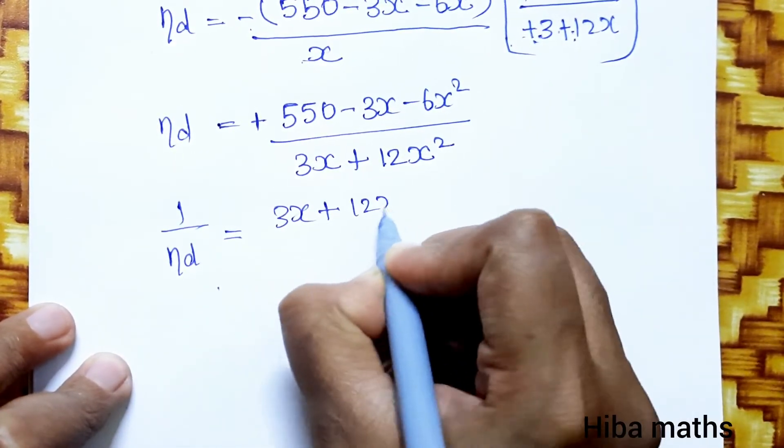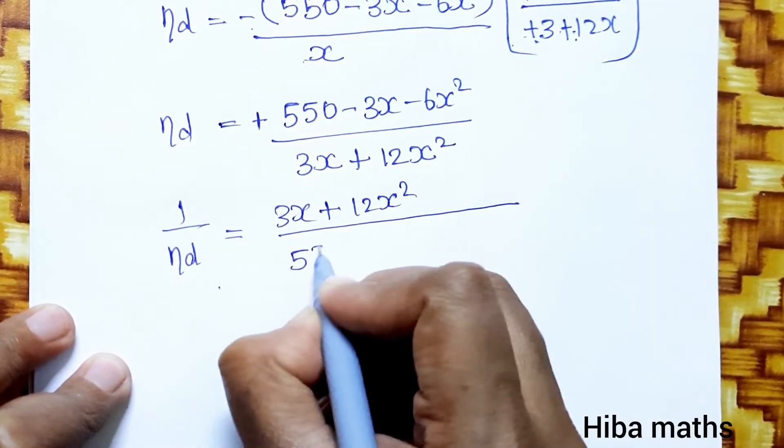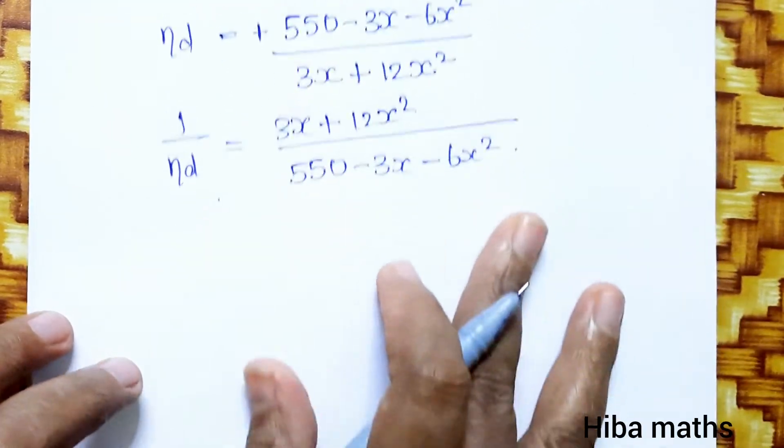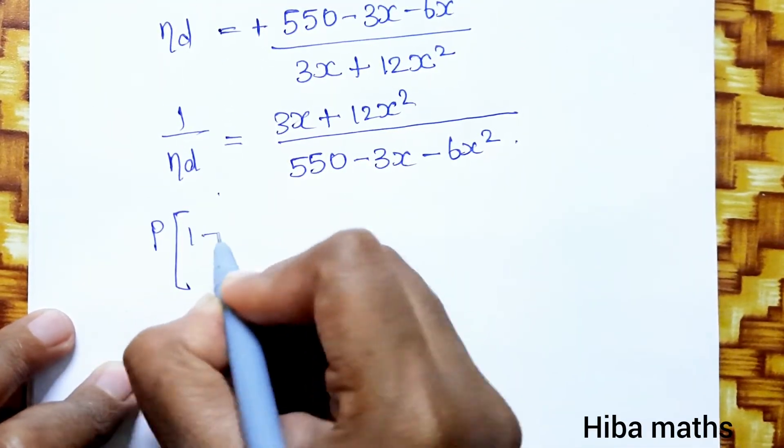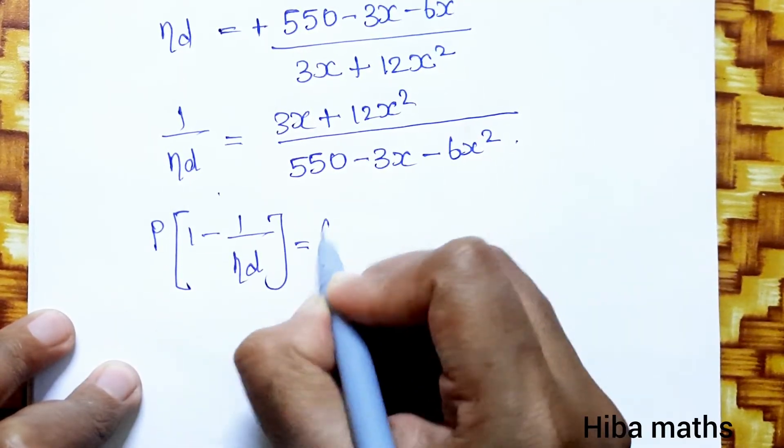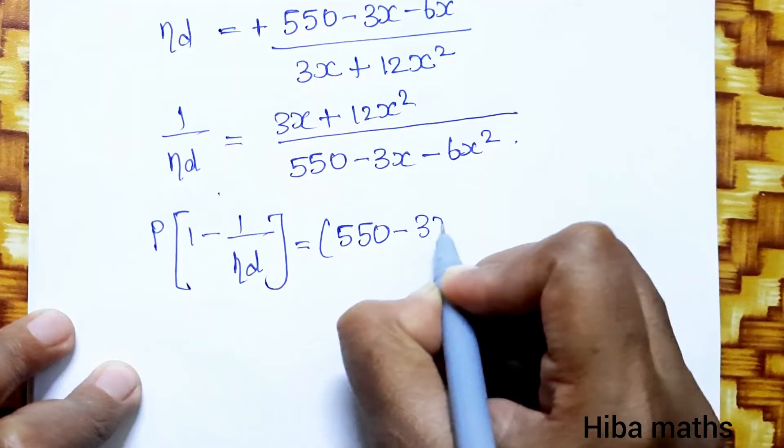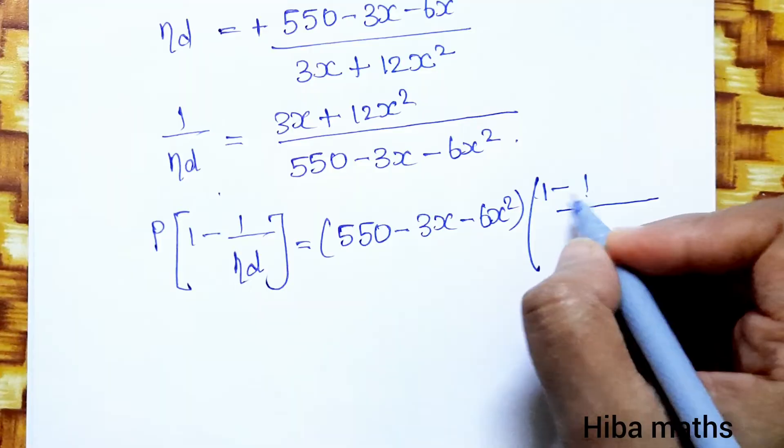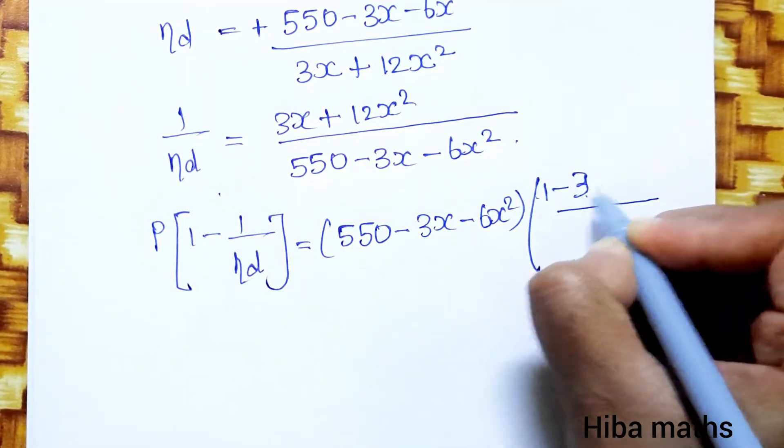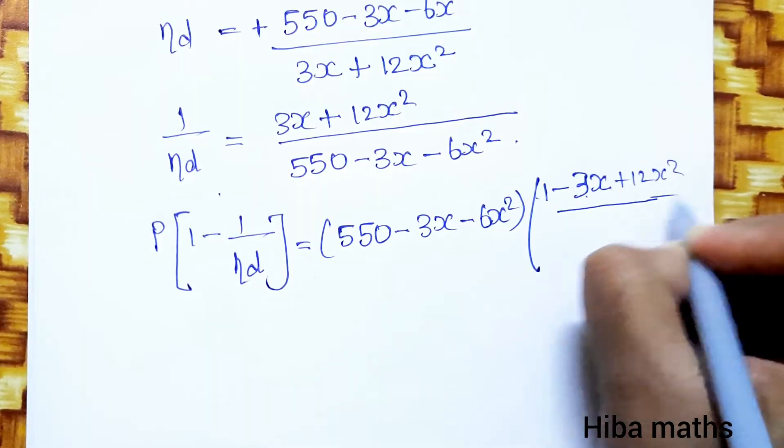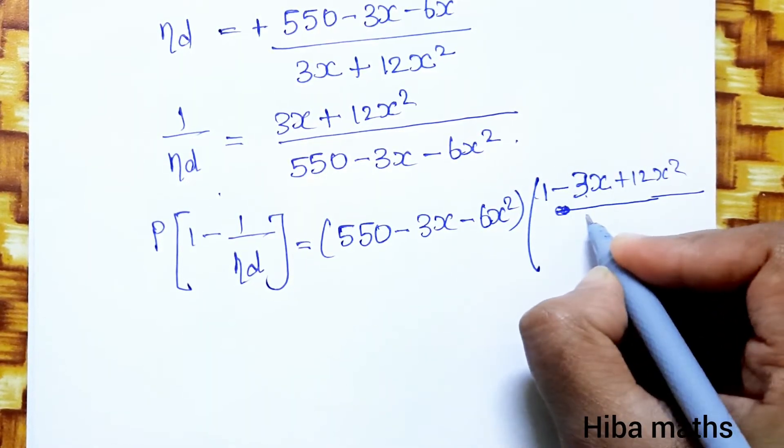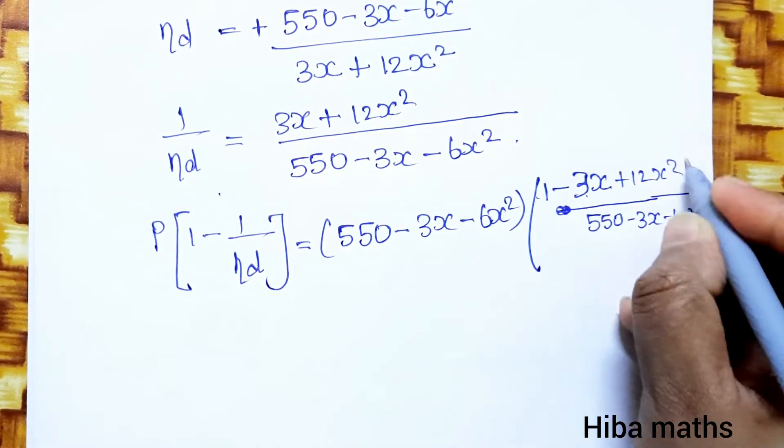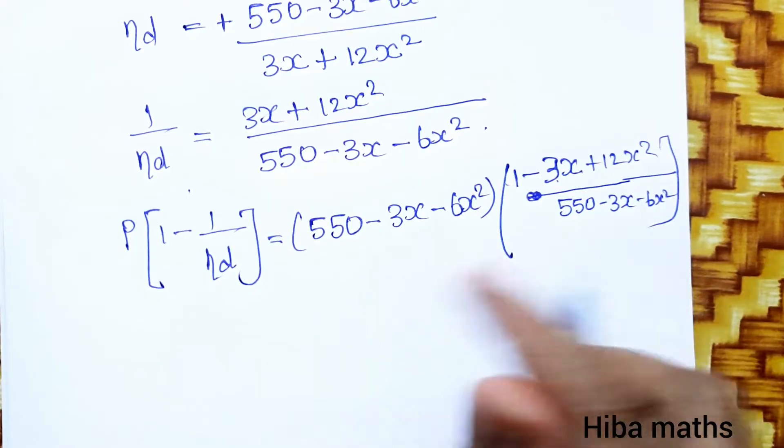Now RHS, P into 1 minus 1 by eta d, which is equal to P value 550 minus 3x minus 6x square, into 1 minus 1 by eta d. 1 by eta d value is 3x plus 12x square divided by 550 minus 3x minus 6x square.